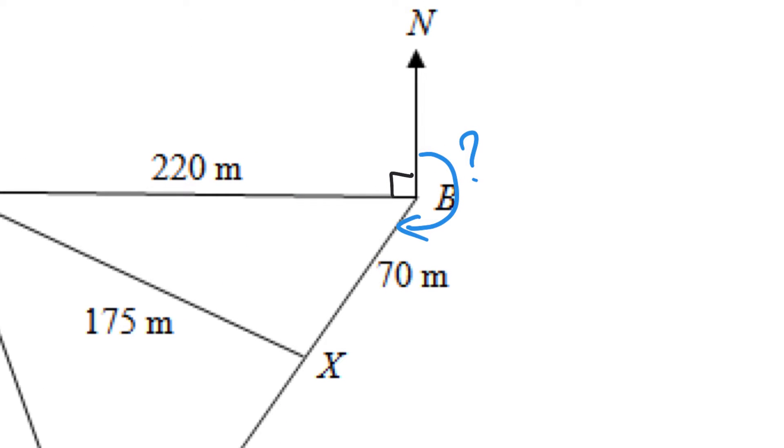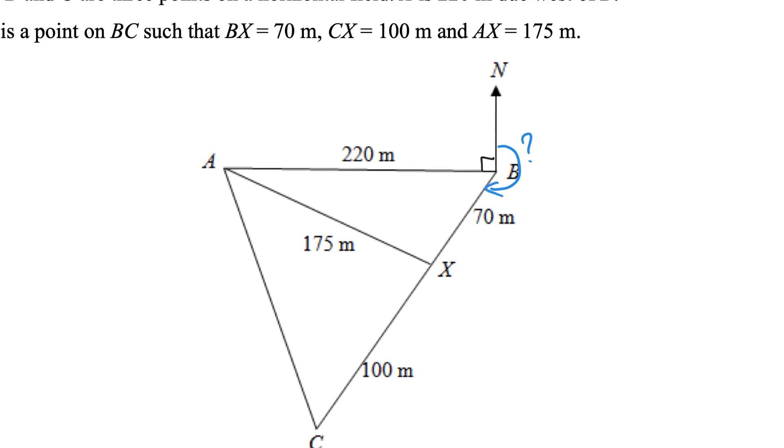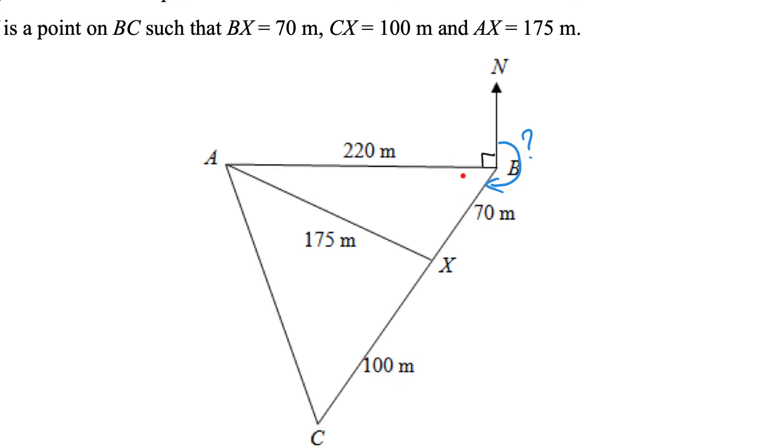Alright, conveniently, we already know this is 90 degrees. Maybe I can find this angle, then I can take 360, subtract away 90, subtract away this angle, and I will get this. Can I find this angle? Yes, I have three sides, I know all three sides. I can use cosine rule.